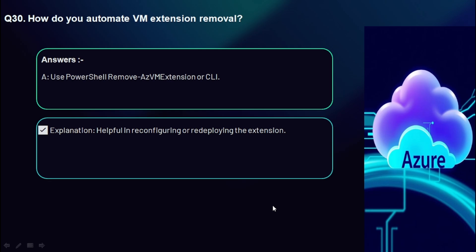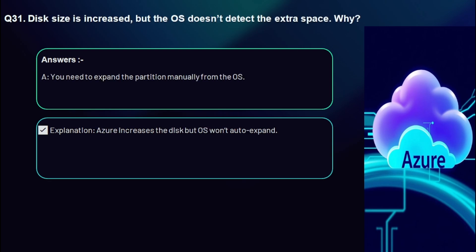Question 30: How do you automate VM extension removal? Use the PowerShell command Remove-AzVMExtension or the equivalent Azure CLI command. This is helpful when reconfiguring or redeploying extensions for VMs.